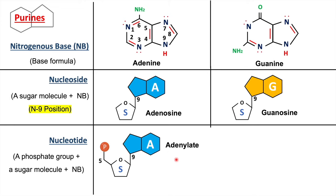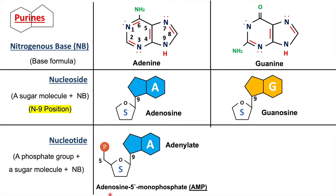When the phosphate group is attached to adenosine, the resulting nucleotide is called adenylate. Alternatively, since the phosphate group is attached to carbon-5 position of the sugar molecule, it is called adenosine 5'-monophosphate, or AMP. If there are two phosphate groups it is adenosine diphosphate (ADP), and if there are three phosphate groups it is adenosine triphosphate (ATP).